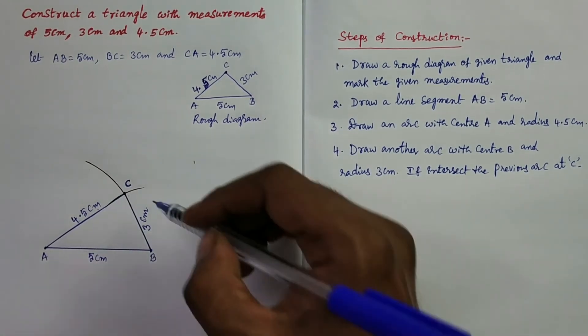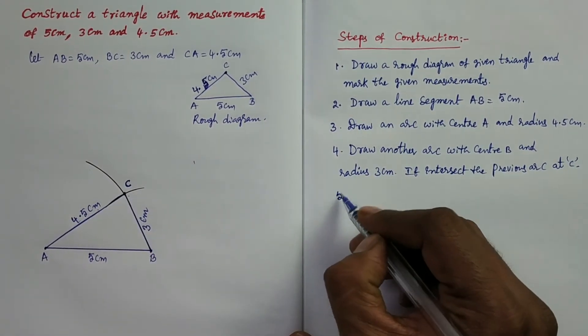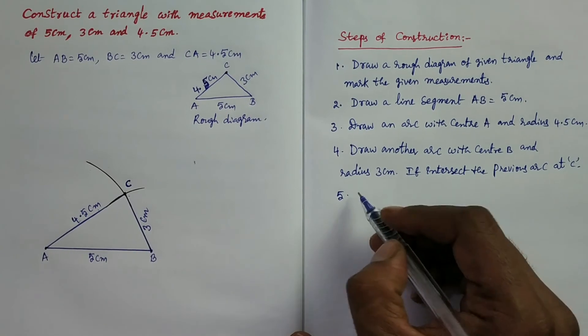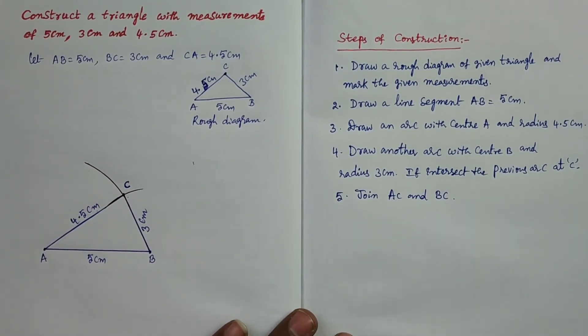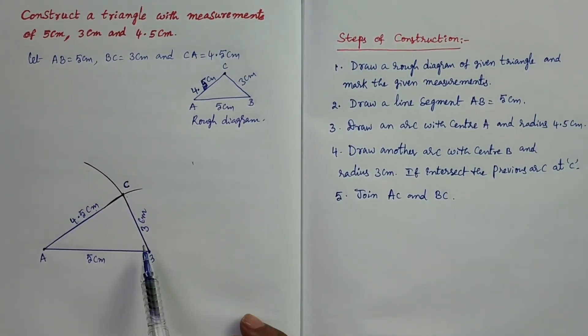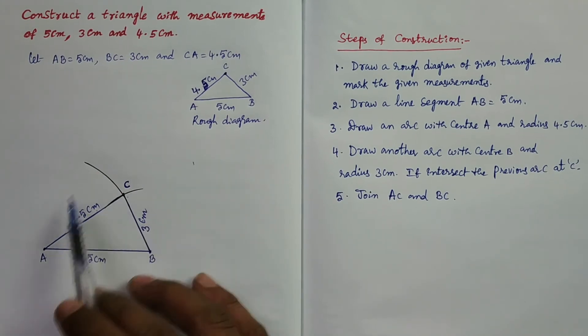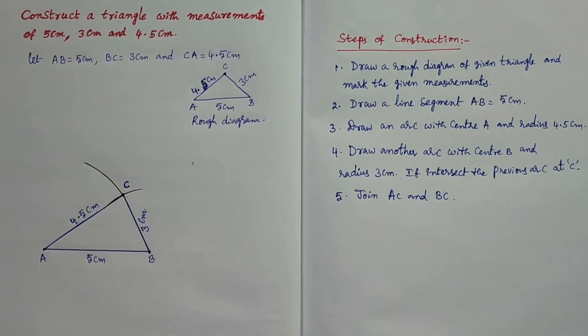Step 5 — join AC and BC. Therefore, the required triangle is constructed.